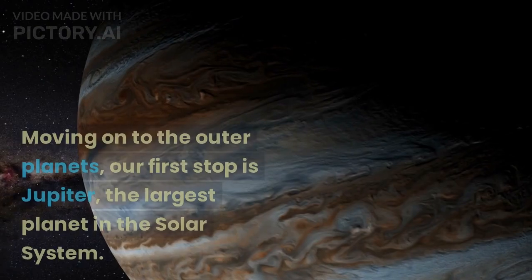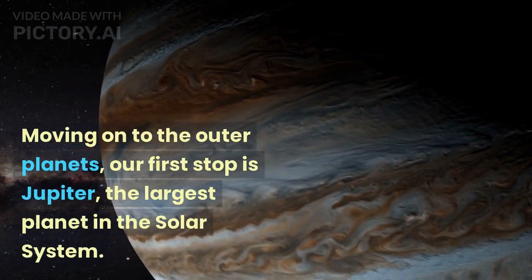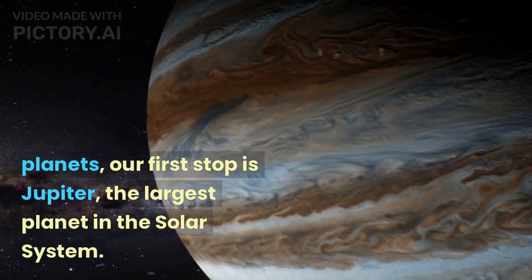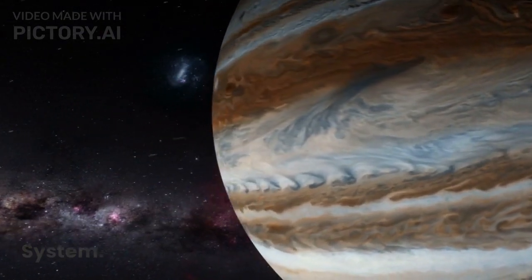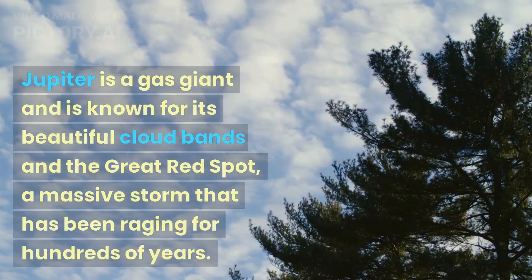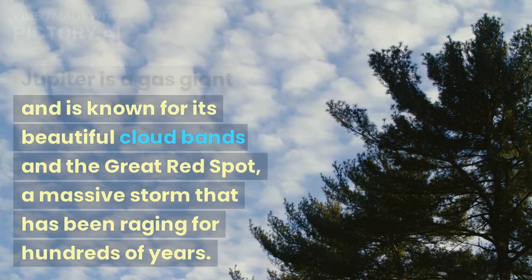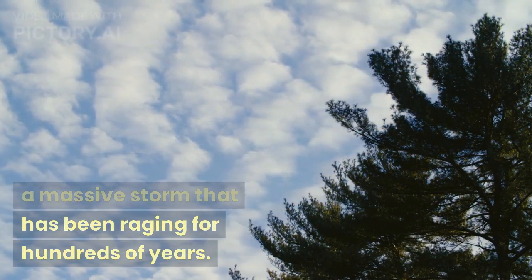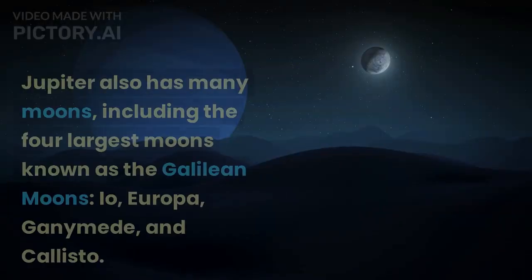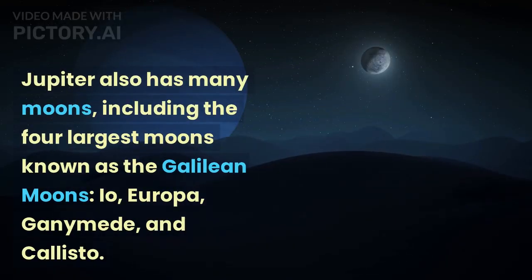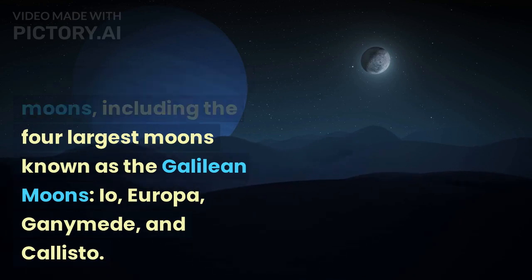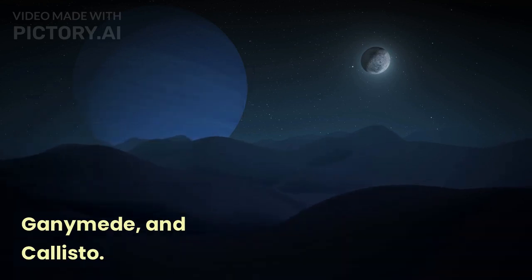Jupiter. Moving on to the outer planets, our first stop is Jupiter, the largest planet in the solar system. Jupiter is a gas giant and is known for its beautiful cloud bands and the great red spot, a massive storm that has been raging for hundreds of years. Jupiter also has many moons, including the four largest moons known as the Galilean moons: Io, Europa, Ganymede, and Callisto.